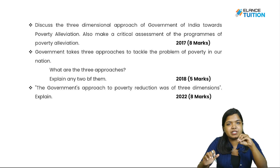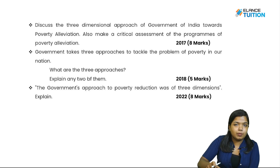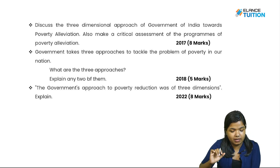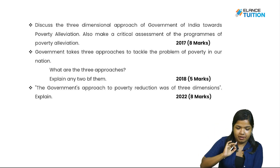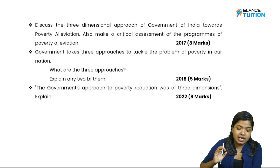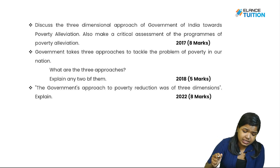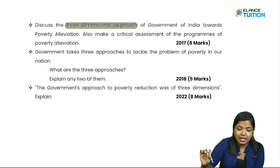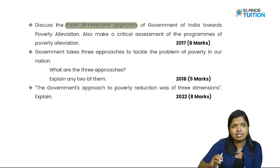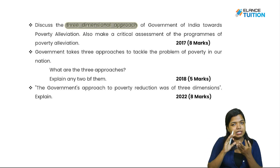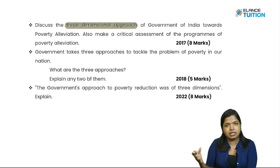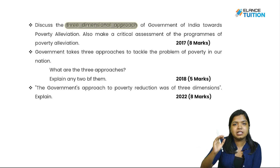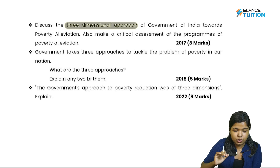When we look at the same questions from previous years, we have to answer them in 8 marks. The question is: discuss the three-dimensional approach of the Government of India towards poverty alleviation and also make a critical assessment of the programs of poverty alleviation. That is why we write textbook material about the three-dimensional approach.